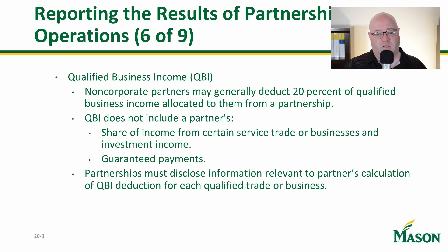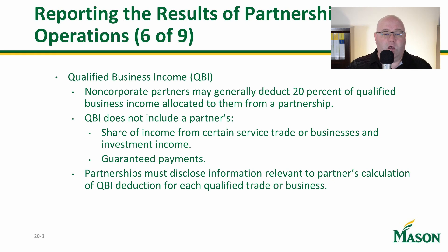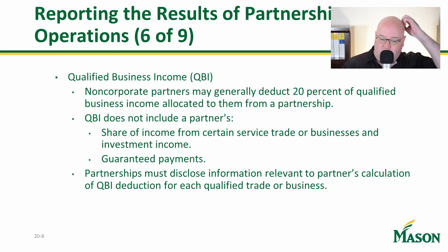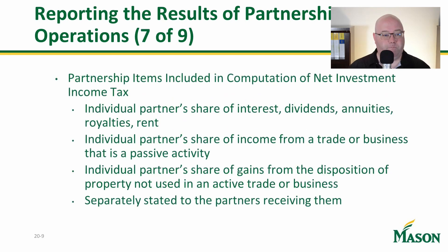If you want to pay a partner through guaranteed payments — say $100,000 — the first thing out of your mouth as their advisor should be: make sure your taxes are taken care of. That's a very important thing to communicate to your client, because they'll owe self-employment tax and income tax on those guaranteed payments.